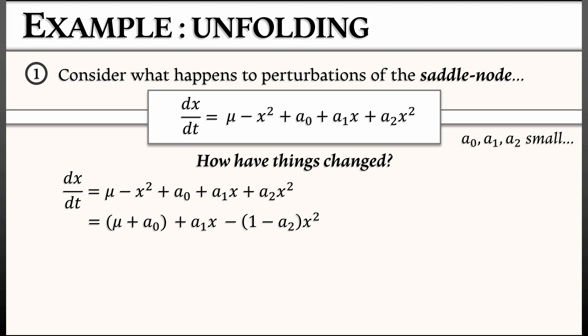Now, let's think. For the saddle node, the right-hand side, μ - x², what is that? In the μ-x plane, that's a parabola. And the coefficient in front of that x² term is negative. Now, after we've perturbed it, we still have a second order equation. We still have a parabola. And the coefficient in front of that x² term is still negative. Why? Because a₂ is very, very small.